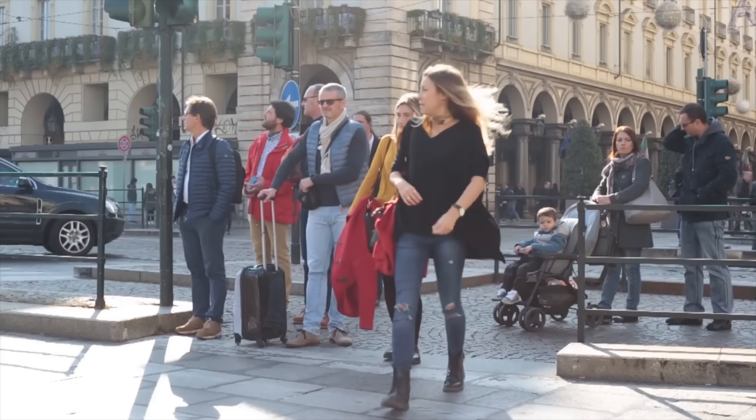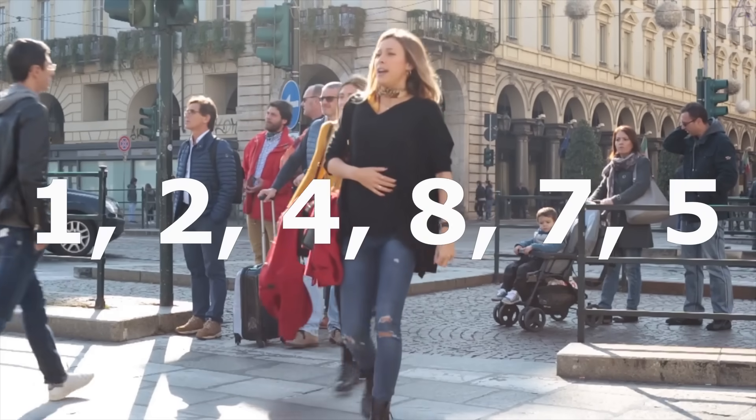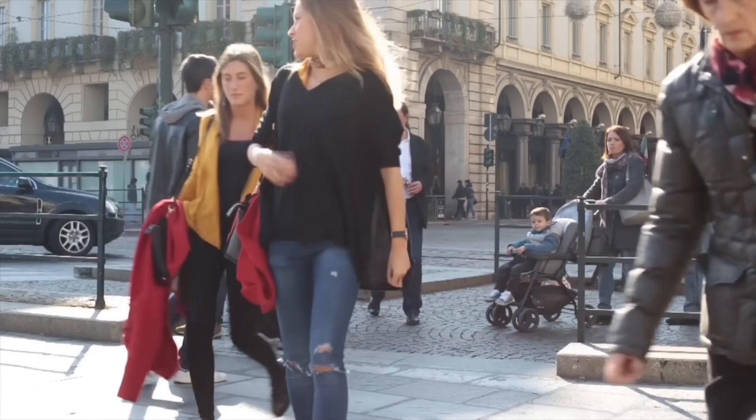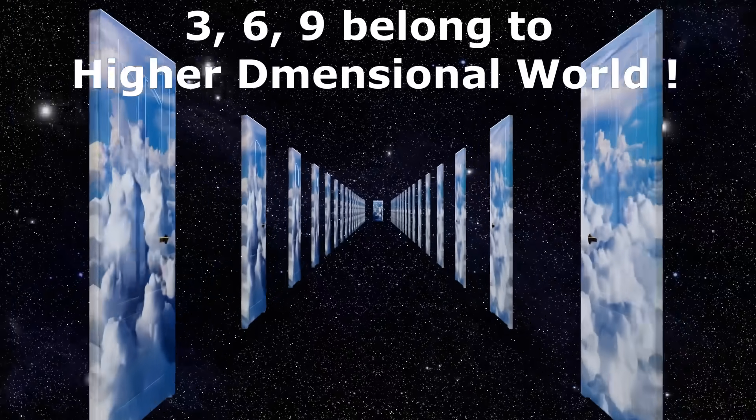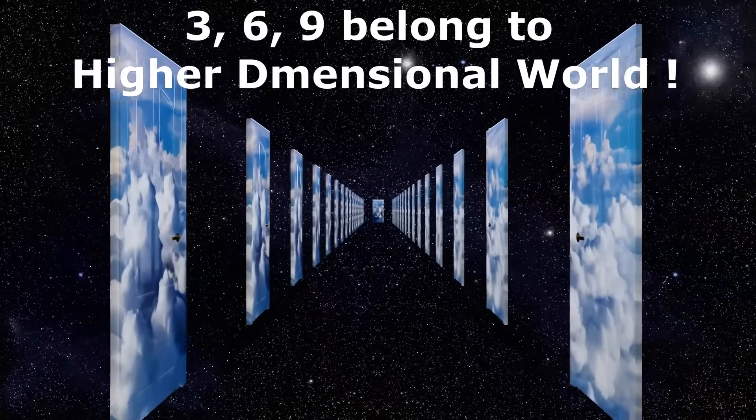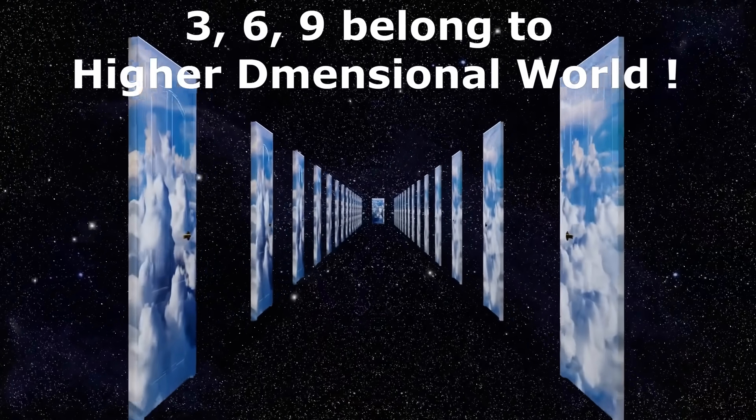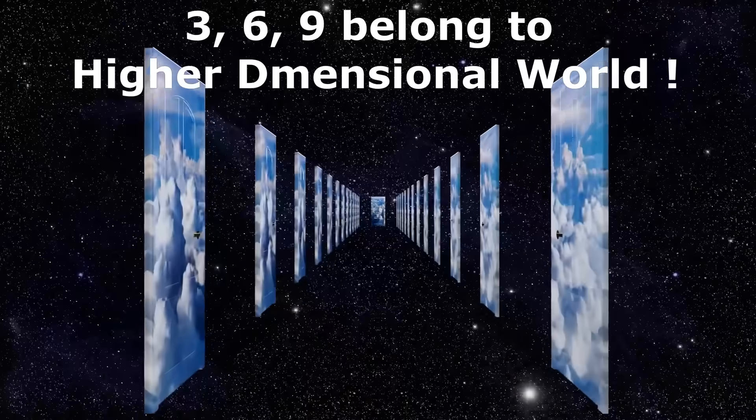According to some researchers, numbers 1, 2, 4, 8, 7 and 5 represent our 3 dimensional world where we live in. An absence of numbers 3, 6 and 9 in the sequence means these numbers belong to a higher dimensional world.